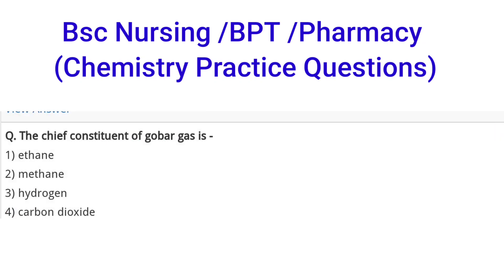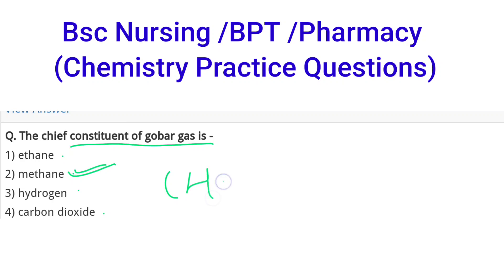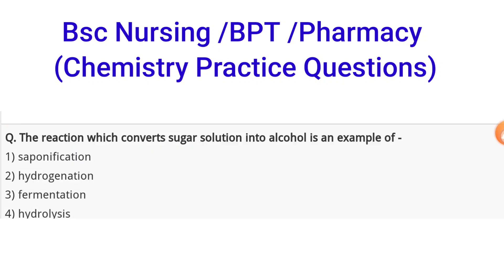Next question: the chief constituent of gobar gas is — options are ethane, methane, hydrogen, or carbon dioxide. The correct option is B, that is methane. Methane is the chief constituent of gobar gas.